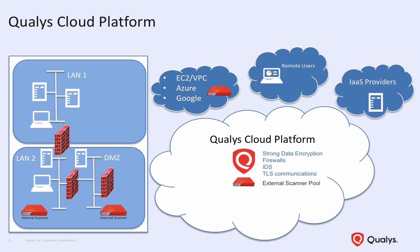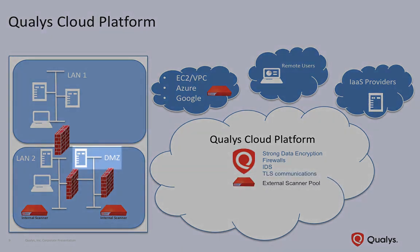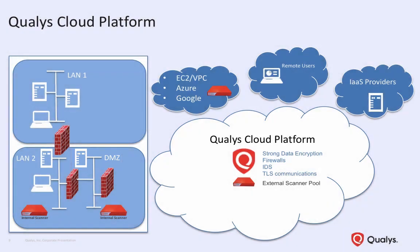You'll find lab exercises in this course that provide steps for launching scans using scanner appliances from the Qualys Cloud Platform's external scanner pool. Our training lab targets live in a typical DMZ environment where the perimeter firewall has been configured to allow packets from the Qualys external scanner pool. External scanner appliances are ideal for scanning public-facing targets or host assets with a public IP address. By default, any Qualys user with scanning privileges has access to the external scanner pool.